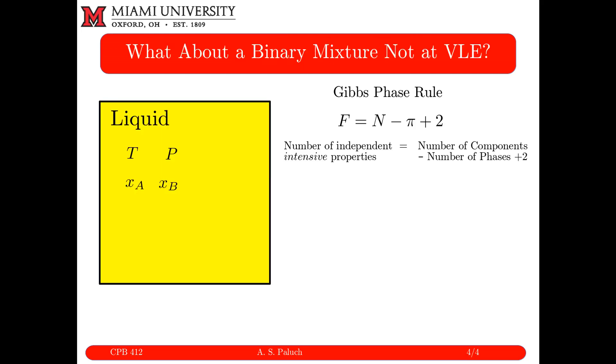What about a binary mixture not at VLE? Well, if I have a binary mixture not at VLE, then N is still 2, but now π is 1. So I have 2 minus 1, now 1 plus 2, equals 3. So for a binary system in a single phase, I need three intensive properties to fix the state of my system.